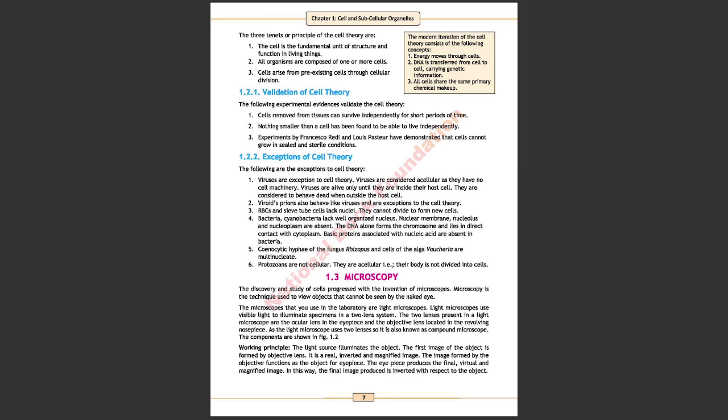The microscopes that you use in the laboratory are light microscopes. Light microscopes use visible light to illuminate specimen in a two lens system. The two lenses present in a light microscope are ocular lens in the eyepiece and objective lens located in the revolving nosepiece.